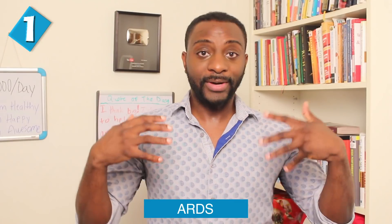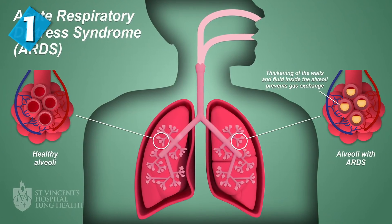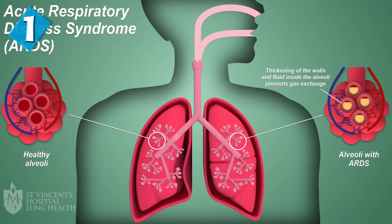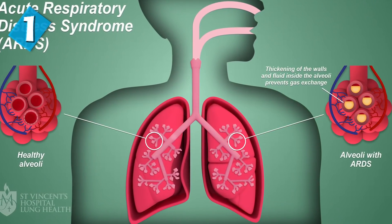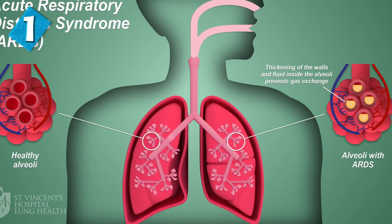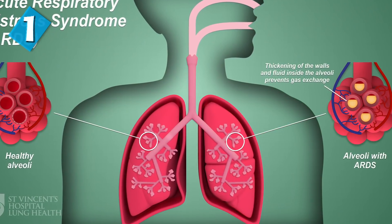The final step is ARDS. As damage to your lungs continues, you may develop acute respiratory distress syndrome — ARDS. This is when your lungs have suffered so much widespread damage that you start running out of functioning alveoli to do the gas exchange work — breathing in oxygen and exhaling carbon dioxide. The damage gets to a point where your lungs can no longer effectively exchange oxygen and carbon dioxide, so you go into respiratory failure and need a ventilator to help you breathe.